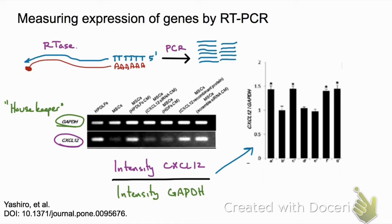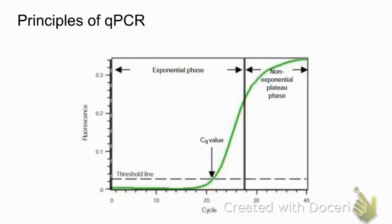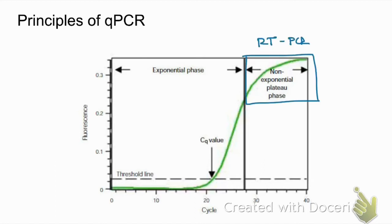This technique allows researchers to compare the expression of a single gene among different samples or cell types. However, reverse transcription PCR has limitations. Looking at this graph, the green line shows DNA amplification through PCR — it's exponential at first, but toward the end amplification becomes inhibited and plateaus. The limitation of reverse transcription PCR is that it measures DNA in this non-exponential phase, so researchers may not be able to detect true differences in gene expression between two samples.